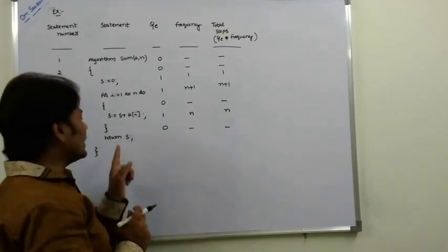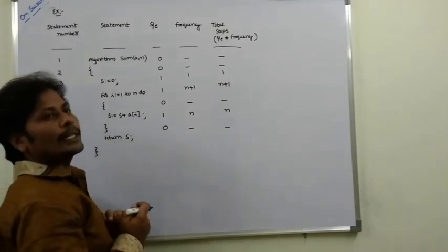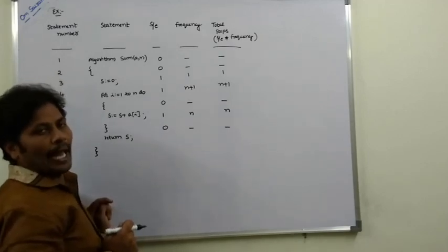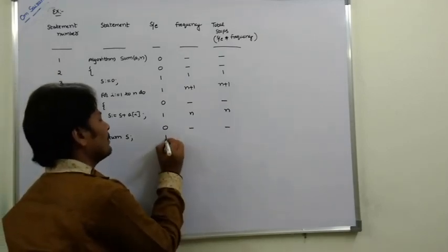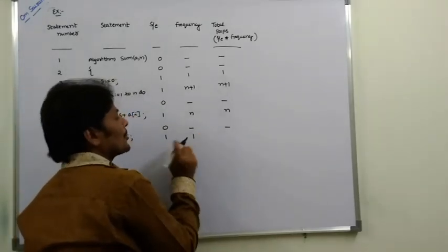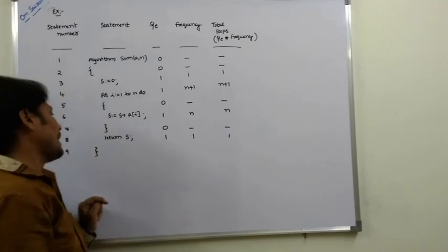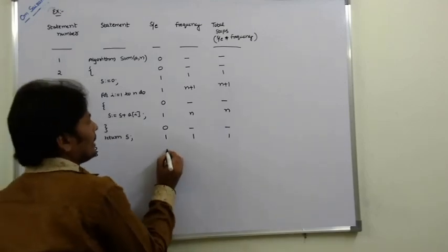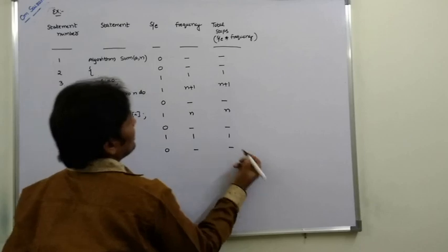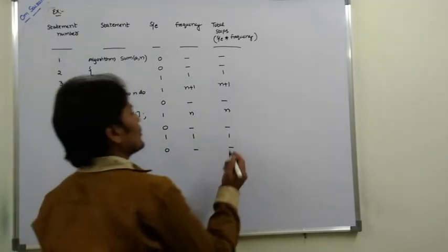The statement 'return S' is a valid statement. After finding the sum value, we return S. It is executed once, so frequency = 1 and total steps = 1 × 1 = 1. The final closing brace is not a valid statement, so there is no frequency and no total steps.